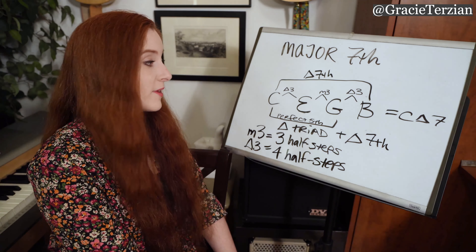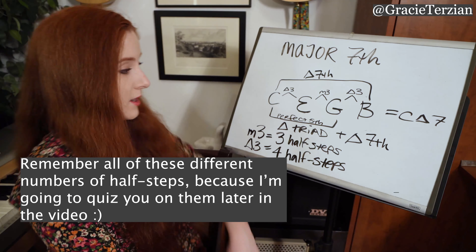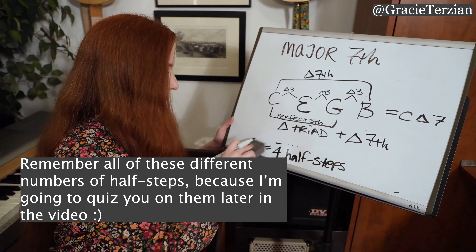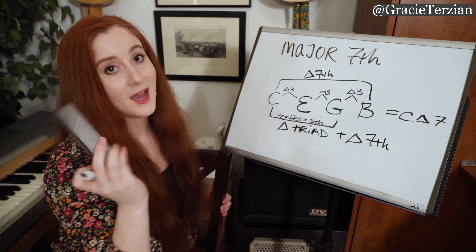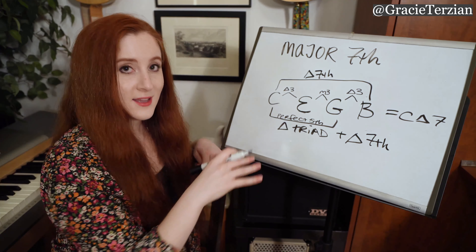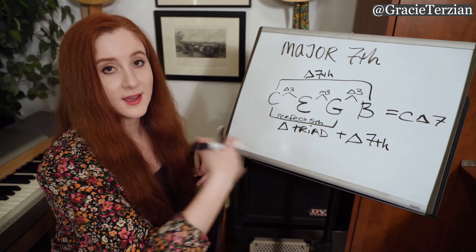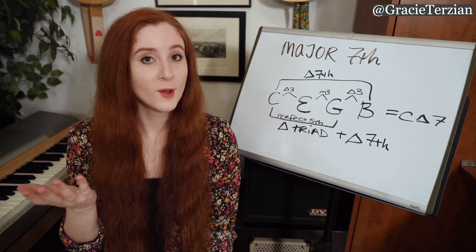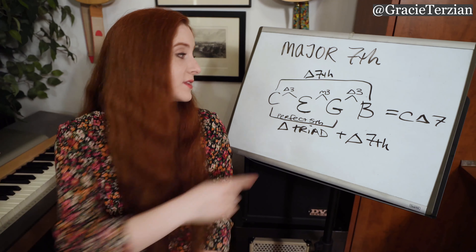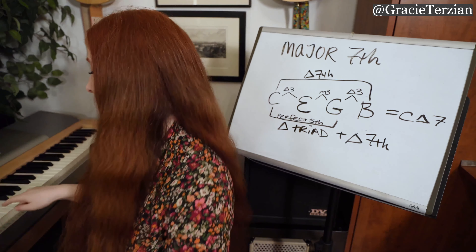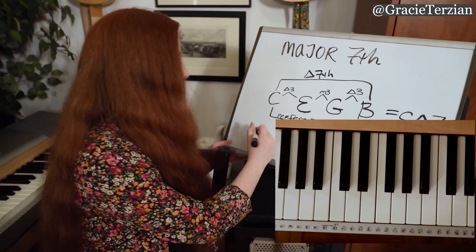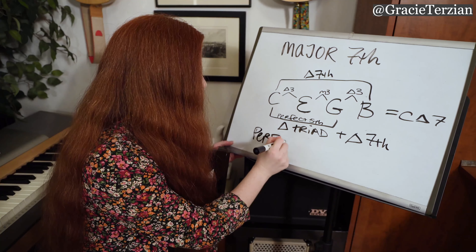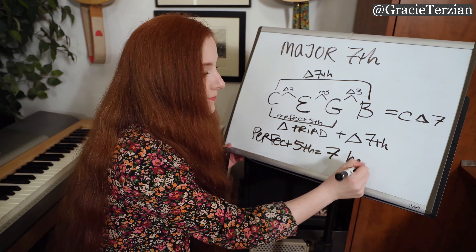What other intervals do we have? We also have a perfect fifth. By the way, if you want the notes from this video and practice worksheets, I have links in the description below where you can download a printable PDF. Now, a perfect fifth — from C to G. Starting on C: 1, 2, 3, 4, 5, 6, 7 — seven half steps between C and G. Therefore, a perfect fifth is seven half steps.